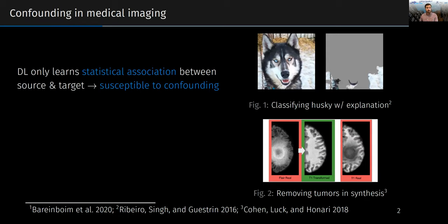Confounding is a problem in machine learning because traditional deep neural networks only learn statistical association between the source and target, which makes them susceptible to confounding.